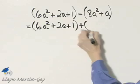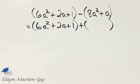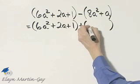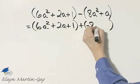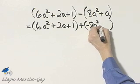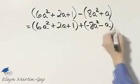And I'll add the opposite of the second polynomial. The opposite of each term would be negative 8a squared plus negative a, or I'll just write minus a.